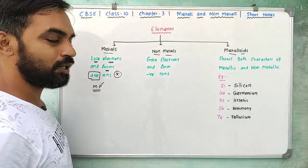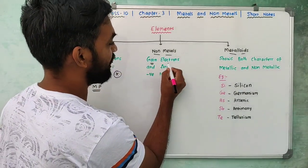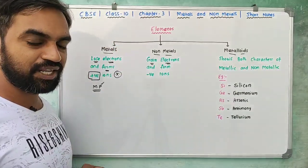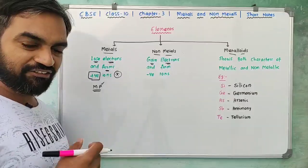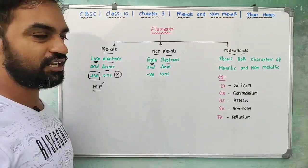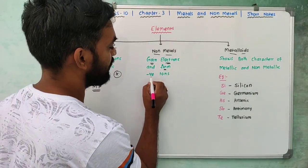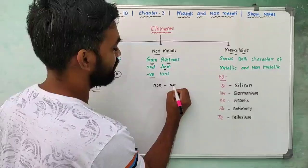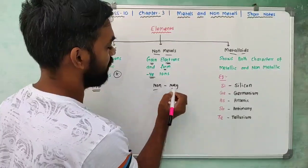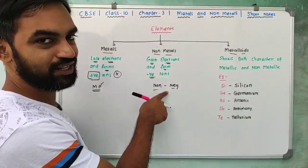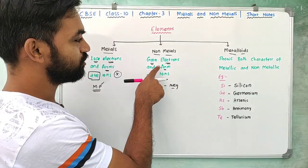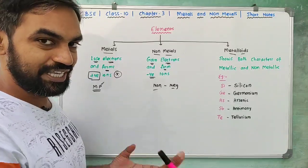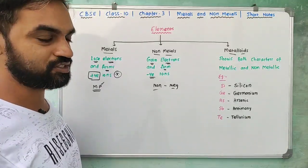Next, non-metals gain electrons — they accept electrons. So negative ions are formed. Non-metals form negative ions — remember, 'N' for non-metals, 'N' for negative. Non-metals form negative ions because they gain electrons.